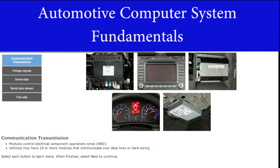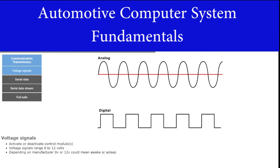The automotive industry has used module control systems in vehicles to control most electrical component operations since the 1980s. A vehicle may have ten or more modules that communicate with each other over data lines or hardwiring depending on the application. Voltage signals are used to activate or deactivate a control module or group of control modules. Voltage signals can range from 0 to 12 volts. Depending on the manufacturer, either voltage could indicate that the module is awake or asleep.